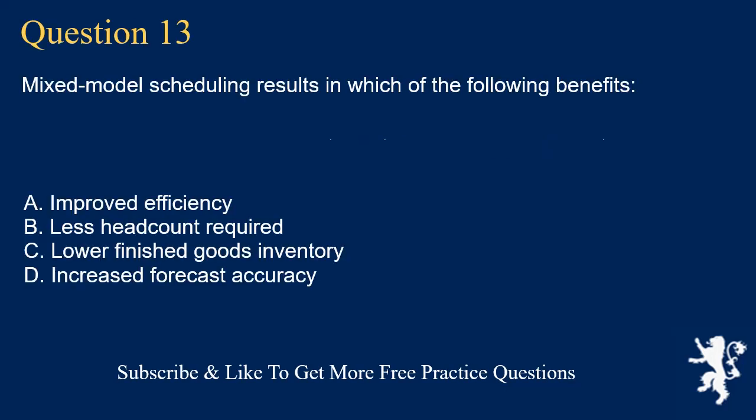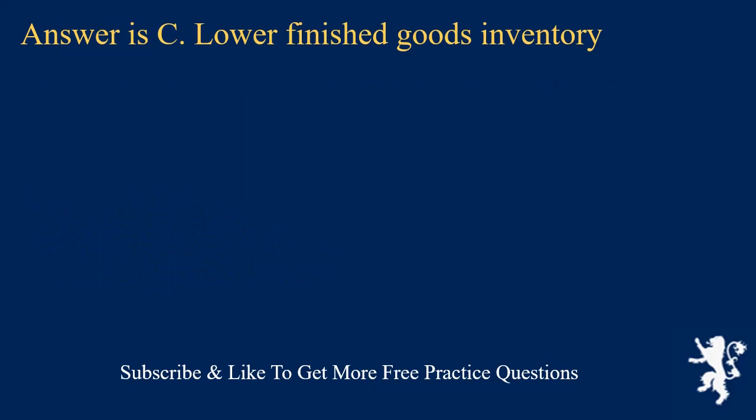Question 13. Mixed model scheduling results in which of the following benefits? A. Improved efficiency. B. Less headcount required. C. Lower finished goods inventory. D. Increased forecast accuracy. Answer is C. Lower finished goods inventory.